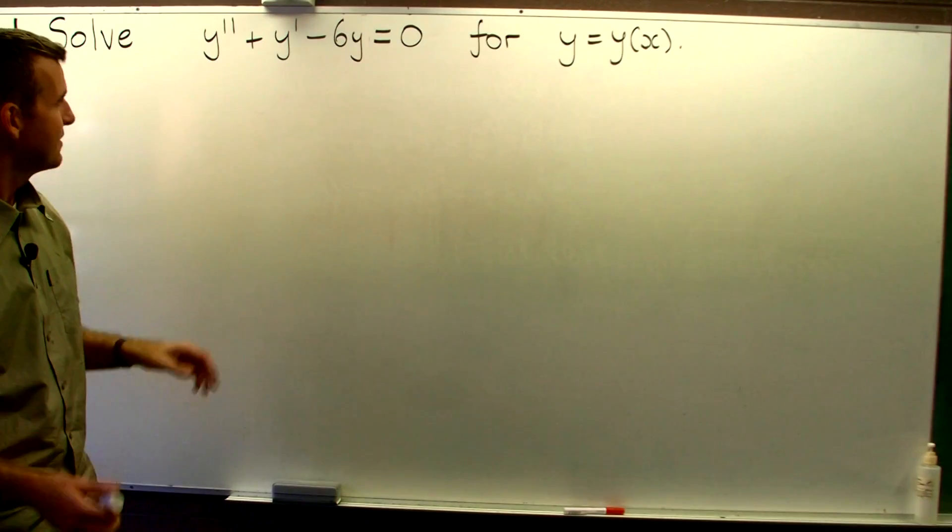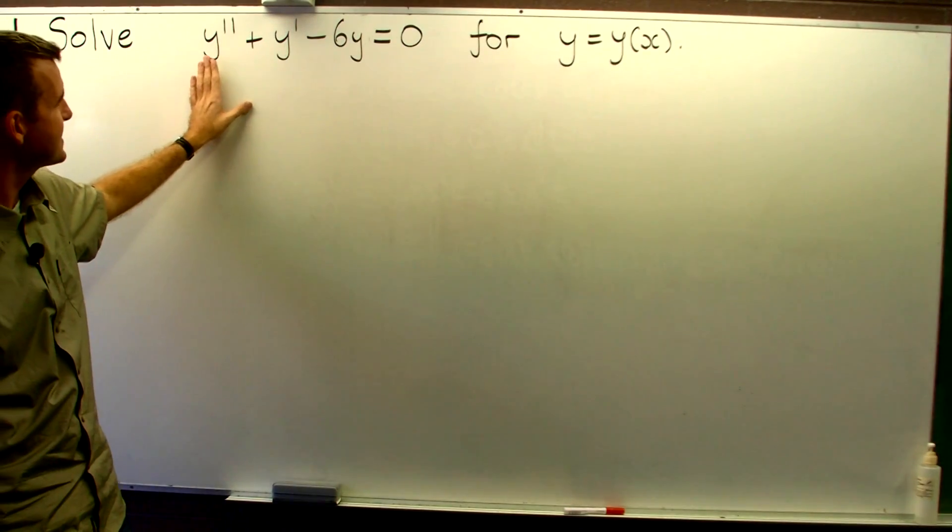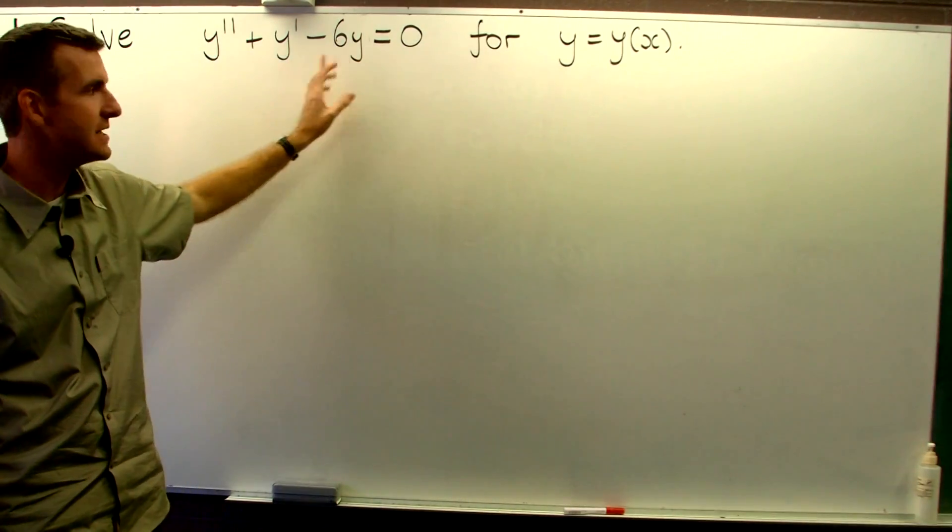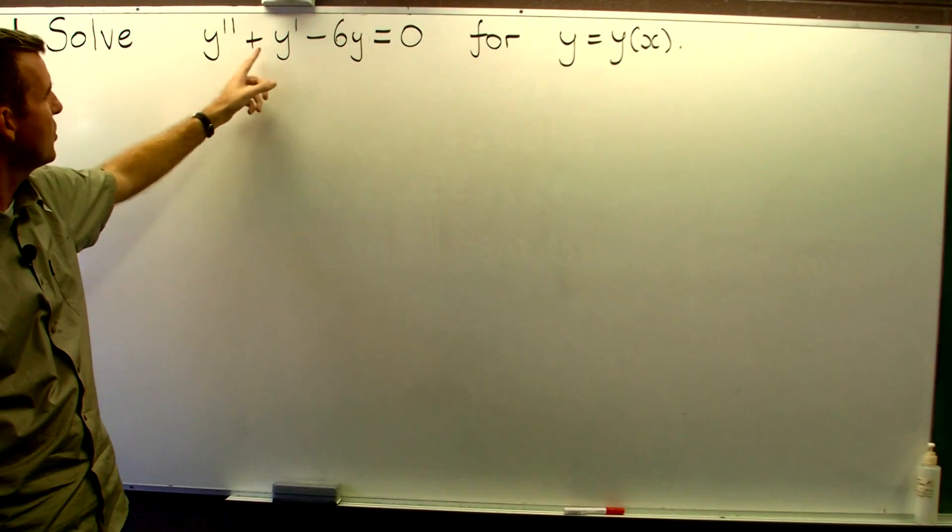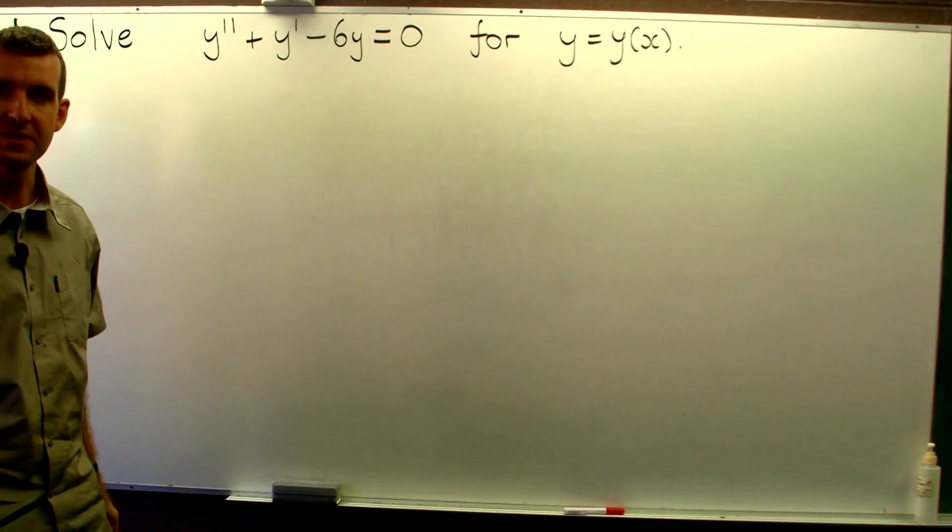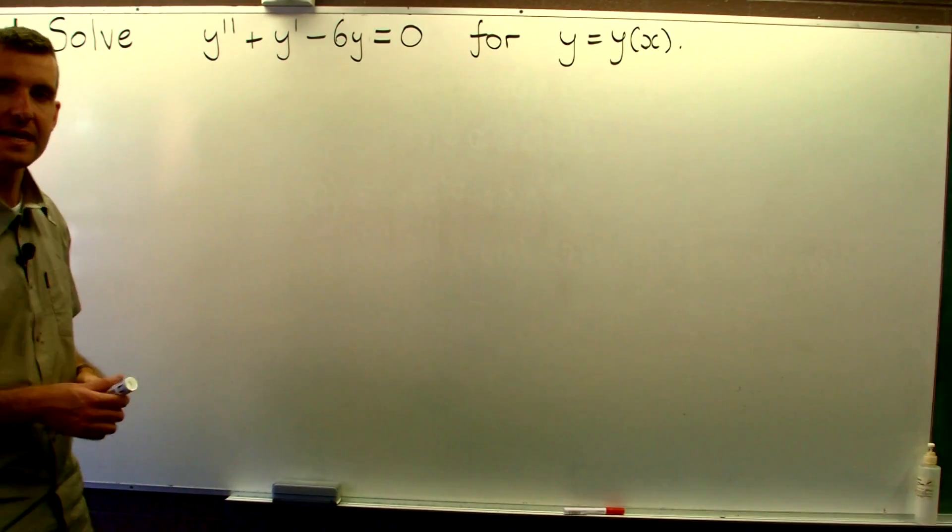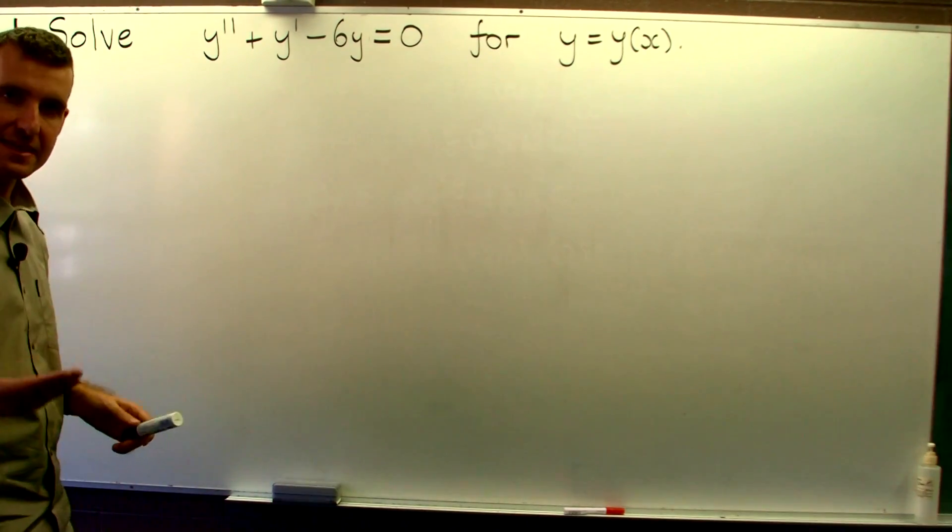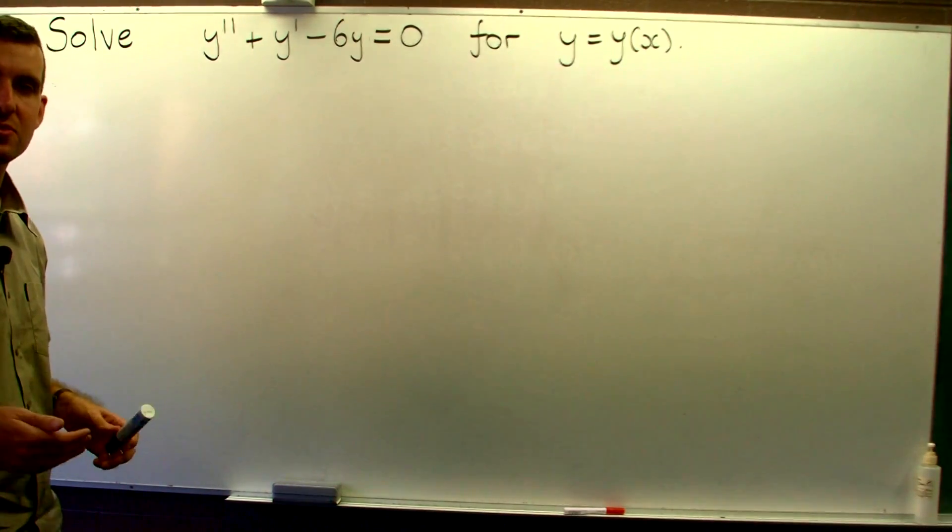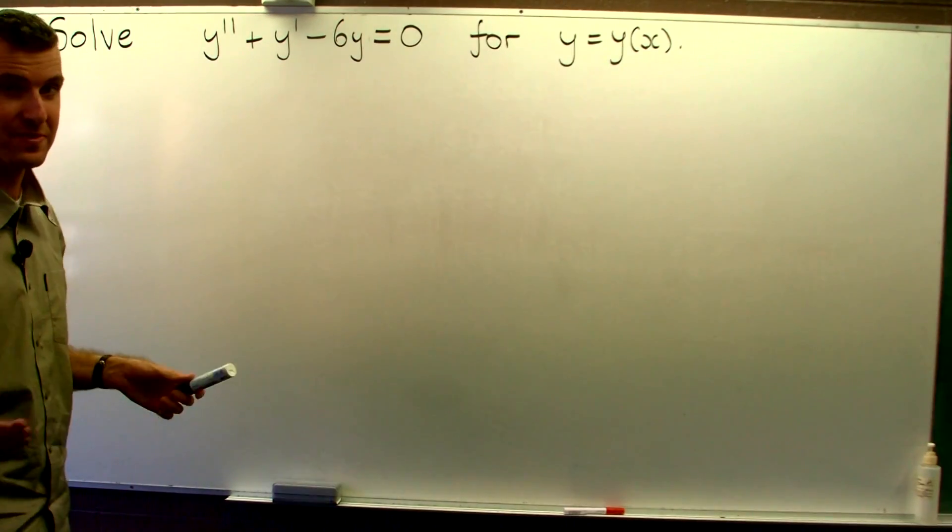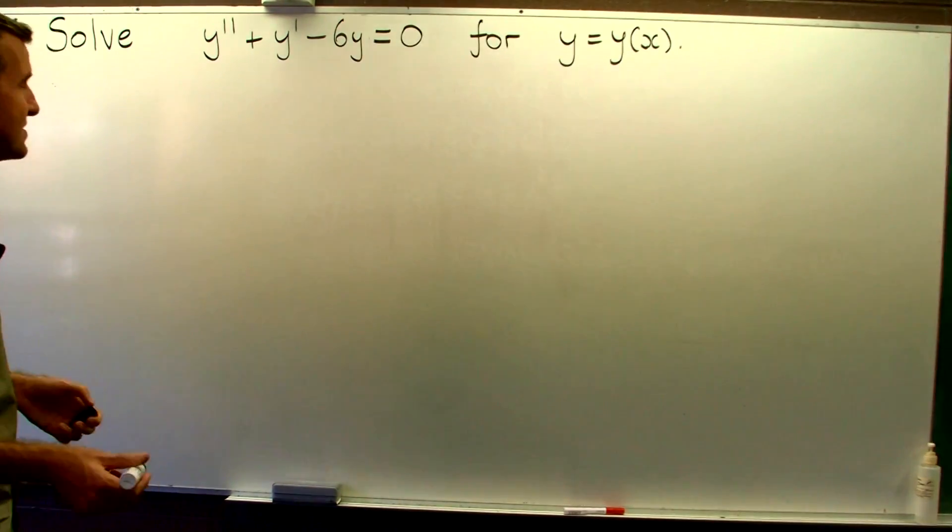Now how do we do it? Well, firstly, notice that our second order ODE is linear and has constant coefficients. In this case, we can reduce the analysis down to solving a quadratic equation. That's the basic idea.